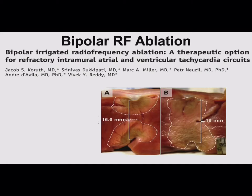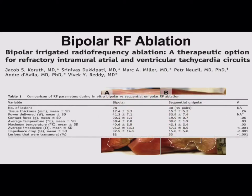For off-label uses when you're struggling and want to optimize depth of lesions: bipolar ablation has been reported. Standard ablation is unipolar — between the tip of your catheter and a reference patch on the patient's back or leg. Bipolar ablation, described by Vivek Reddy and Jacob Carruth, ablates between two catheters on either side of a structure like the septum or endoepi. The advantage is conductive heating from both sides simultaneously, making you more likely to get a larger transmural lesion. In this study, transmural lesions with unipolar were about 30%, but with bipolar about 80%.